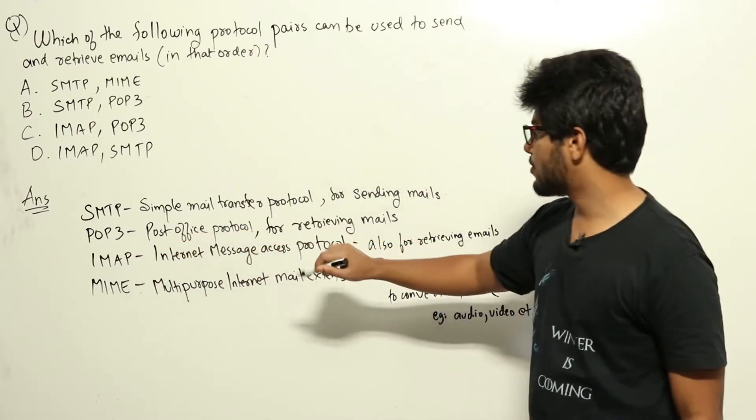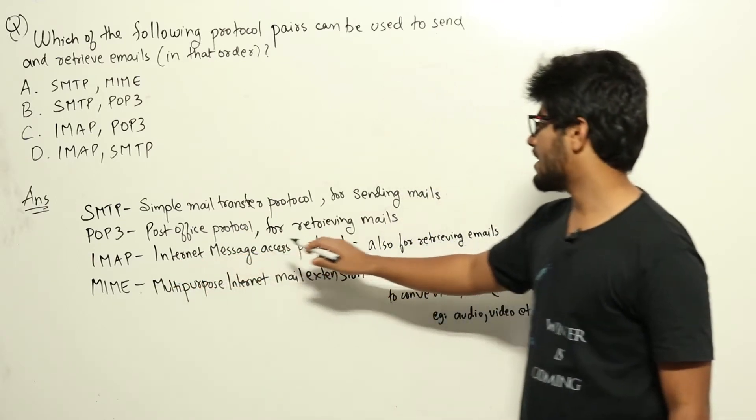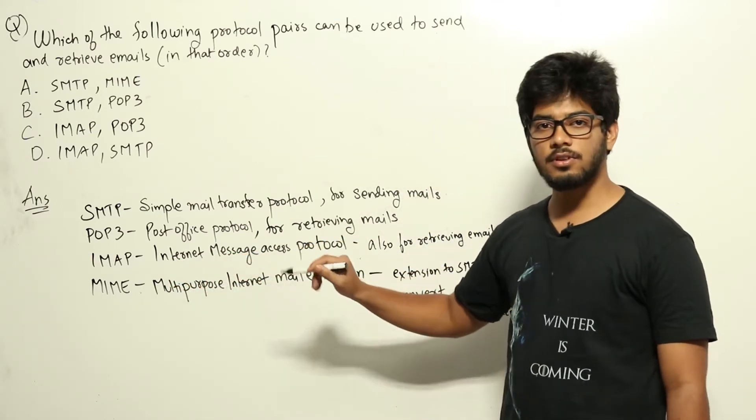POP3, that is Post Office Protocol, is used for retrieving emails. IMAP is Internet Message Access Protocol. This is also used for retrieving emails.